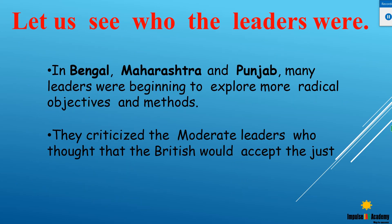Now regarding the prominent leaders, Congress was mainly divided into two parts: Extremists and Moderates. Extremists were very prominent in Bengal, Maharashtra, and Punjab, and their methods were very radical. They highly criticized the moderate leaders because they felt that the moderate leaders easily accepted whatever the British said and were not fighting adequately for Indian rights.